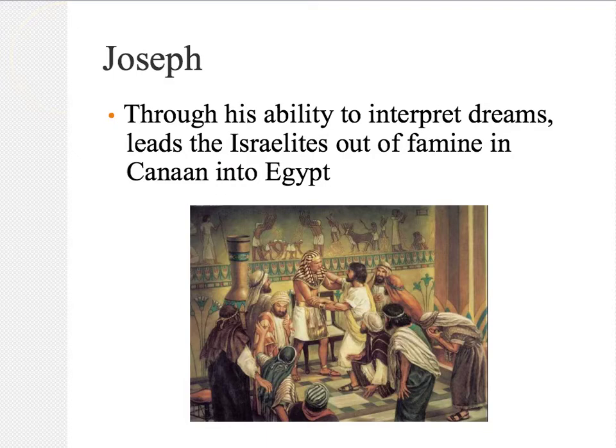Canaan wasn't as lucky — they were really feeling the effects of the famine. So when they went to get food from neighboring Egypt, they found Joseph there and Joseph welcomed them back, and the Israelites moved to Egypt as welcome guests. This is where we're going to see the end of the book of Genesis. All of these stories of the patriarchs and prehistory make up the book of Genesis, but now we're moving on to the book of Exodus.